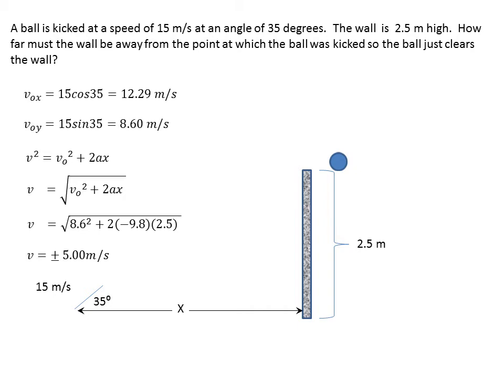Plus is when the ball is on the way up and minus is when the ball is on its way down. In this problem we're assuming that it's on its way up, so we're going to use the plus 5 meters per second.